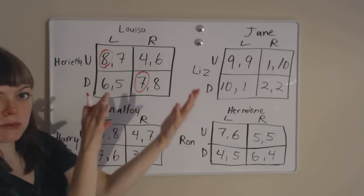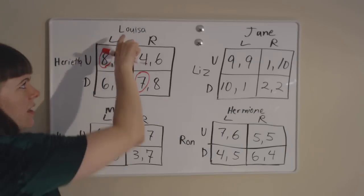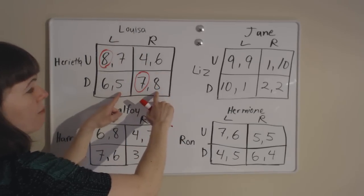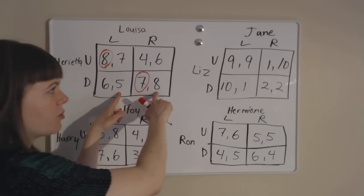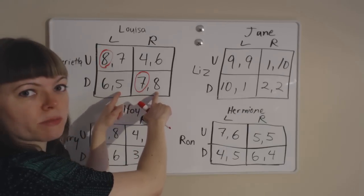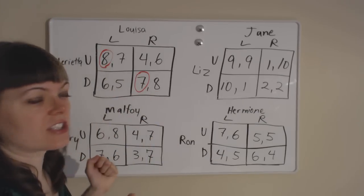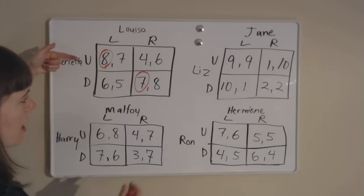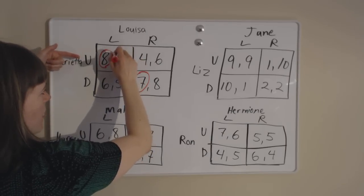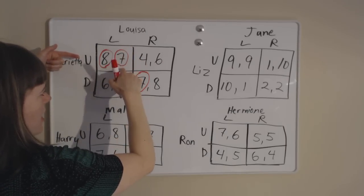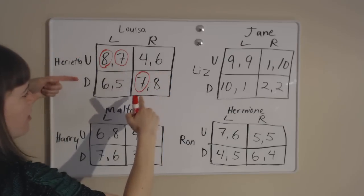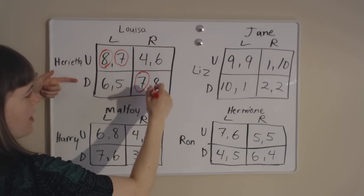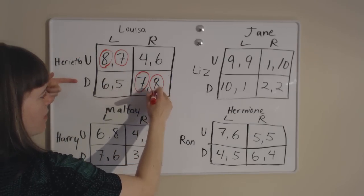Now we switch perspectives and think from Louisa's perspective — player 2. We have to check Louisa's best response to each of Henrietta's strategies. So if Henrietta goes up, Louisa prefers the 7 over the 6. If Henrietta goes down, Louisa prefers the 8 over the 5.